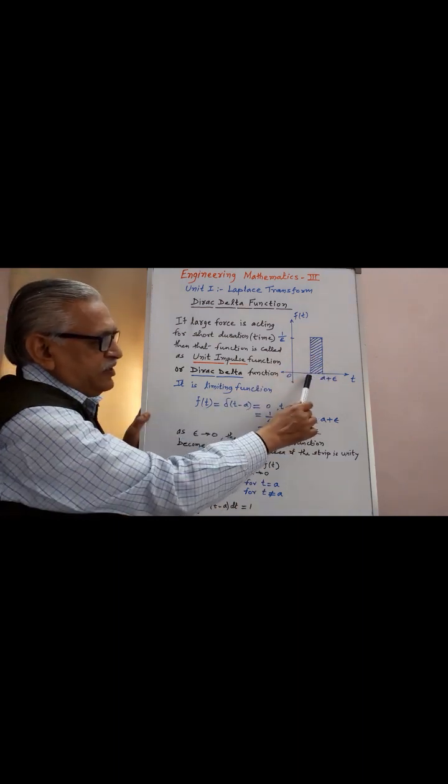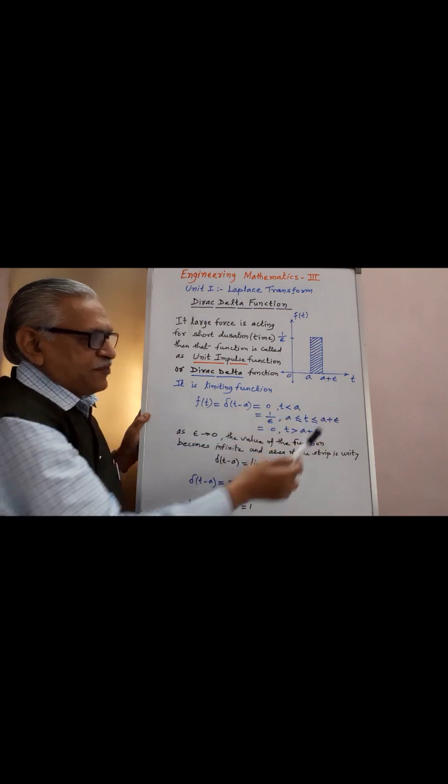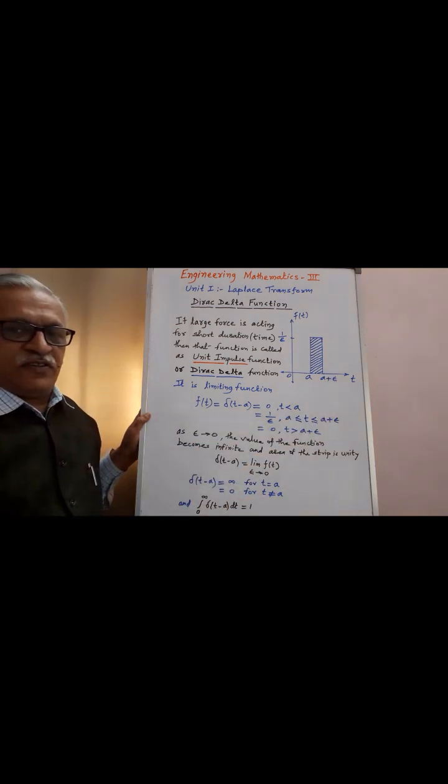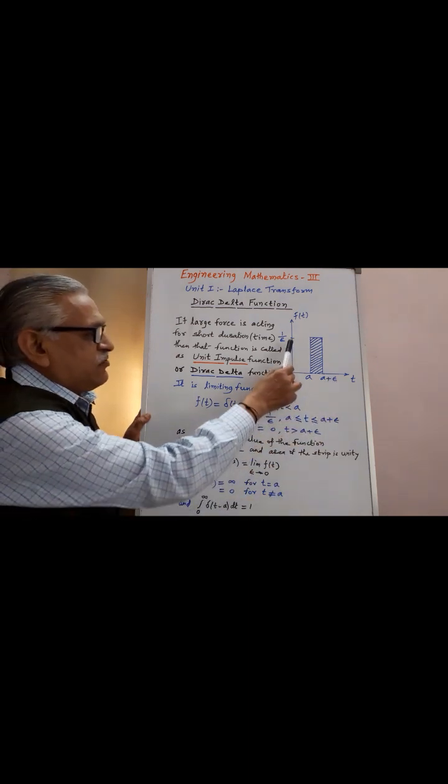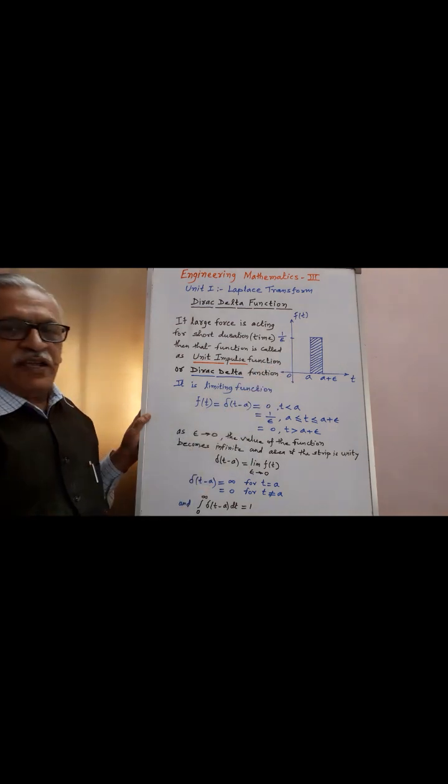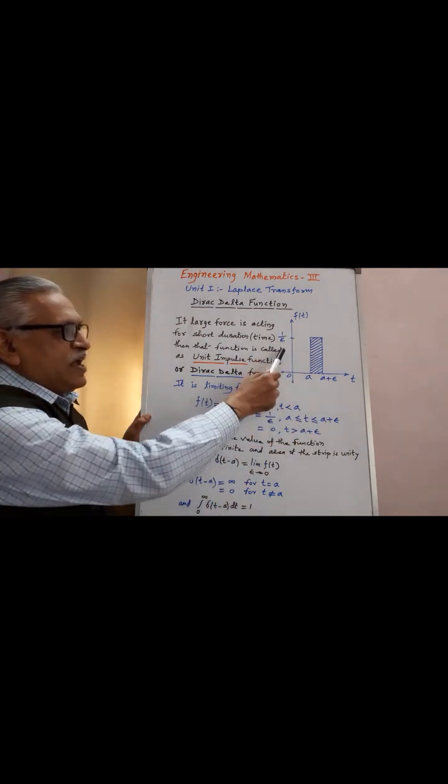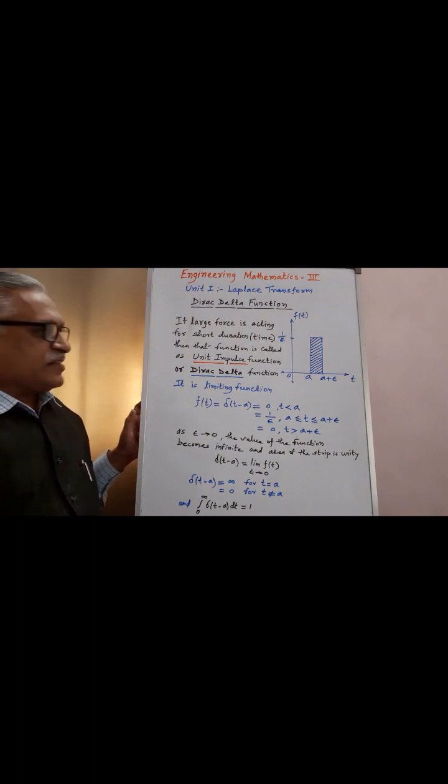This strip is in between a to a plus epsilon. Epsilon is very small quantity and the value of that function is 1 by epsilon. With the value of epsilon, 1 by epsilon is very very large.